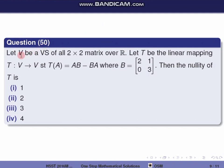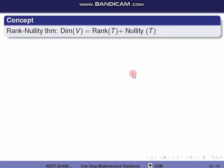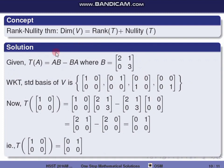Next question, question 50. Let V be the vector space of all 2×2 matrices over ℝ. We need to find the dimension of V and consider a linear transformation T.